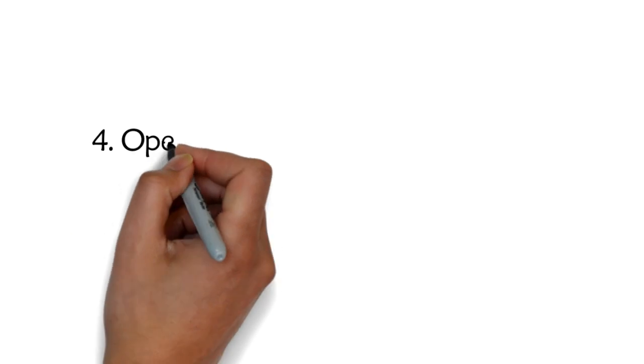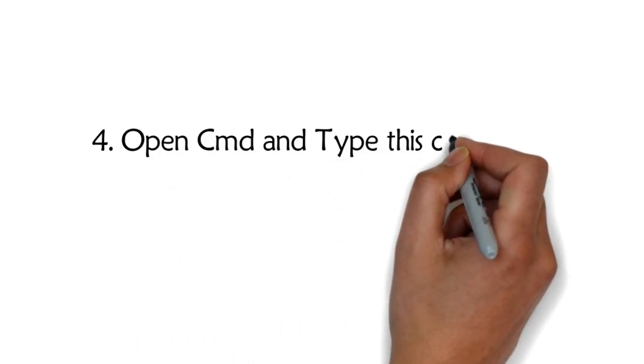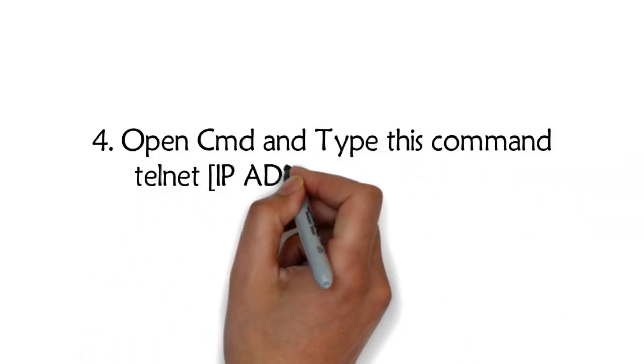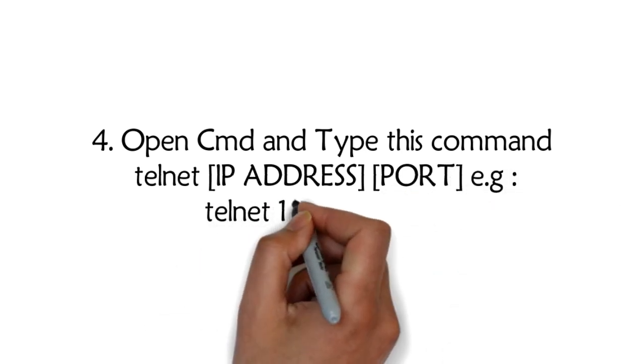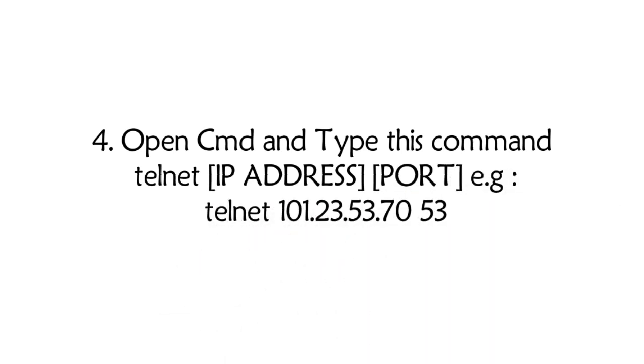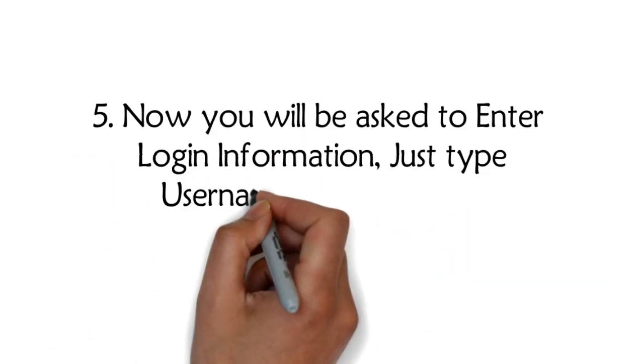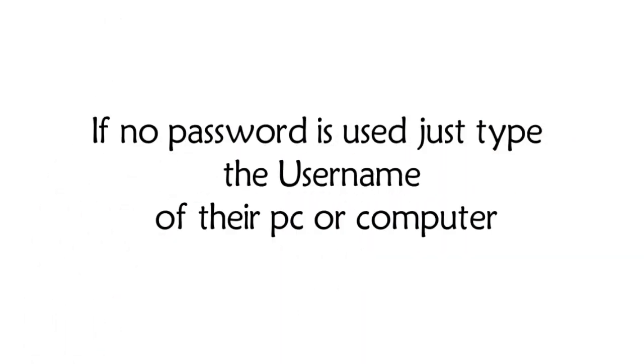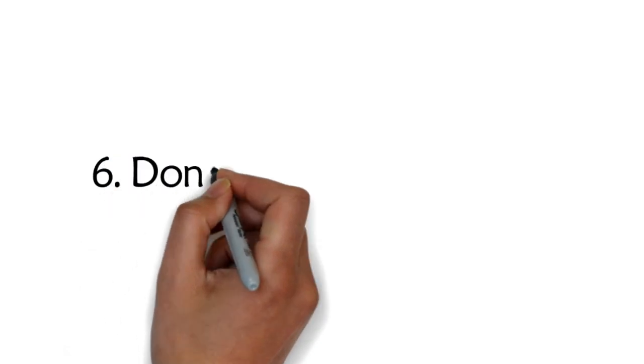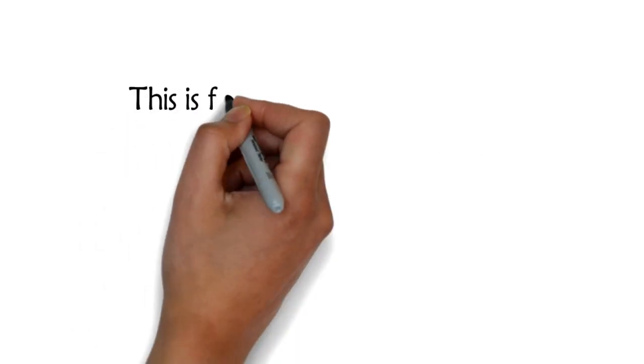After getting open ports of IP. 4. Open CMD and type this command: telnet [IP address] [port], e.g., telnet 101.23.53.70 53. 5. Now you will be asked to enter login information. Just type username and password and hit enter. If no password is used, just type the username of their PC or computer. 6. Done. You access their PC.